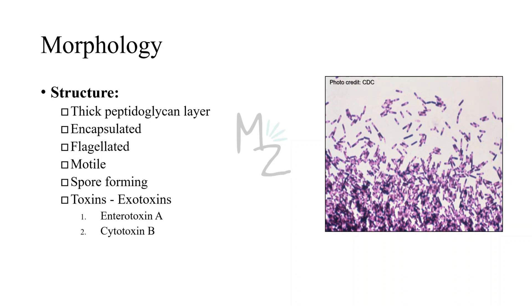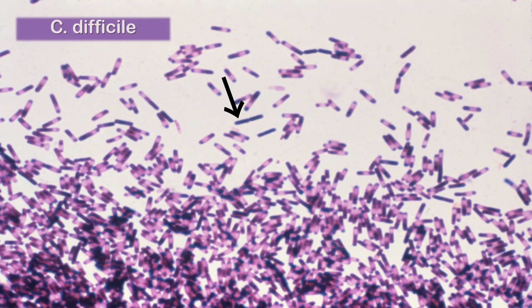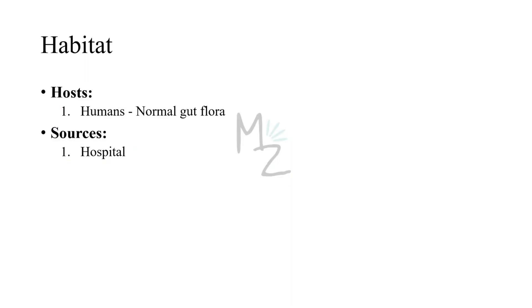It produces spores in unfavorable environments and produces exotoxins A and B. Enterotoxin A — the name references enterocytes, the cells of the intestine. The second toxin is cytotoxin B. This is how Clostridium difficile looks under the microscope.